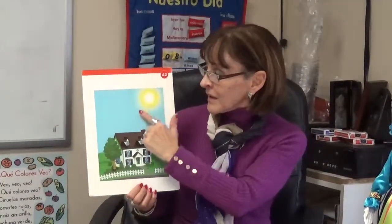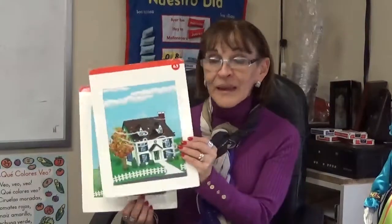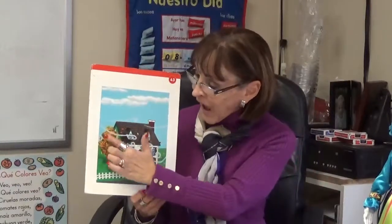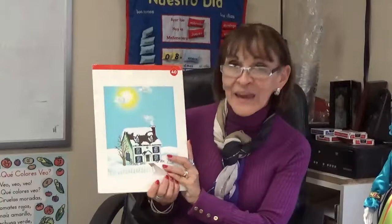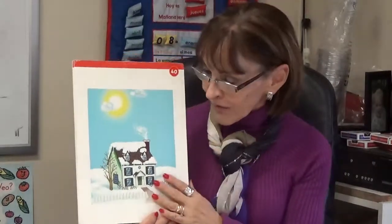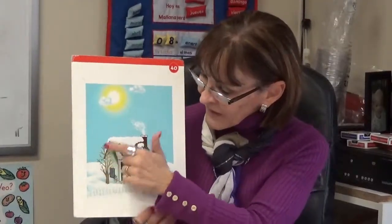The question here is ¿Qué tiempo hace? — What's the weather like? ¿Qué tiempo hace en el verano? Hace calor y hace sol — It is hot and sunny. ¿Qué tiempo hace en el otoño? — What's the weather like in the fall? Hace buen tiempo — It's nice out. Hace fresco — It's cool. Hace viento — It's windy. ¿Qué tiempo hace en el invierno? — What's the weather like in winter? Hace frío — It is cold. Hace frío y nieva — It snows.